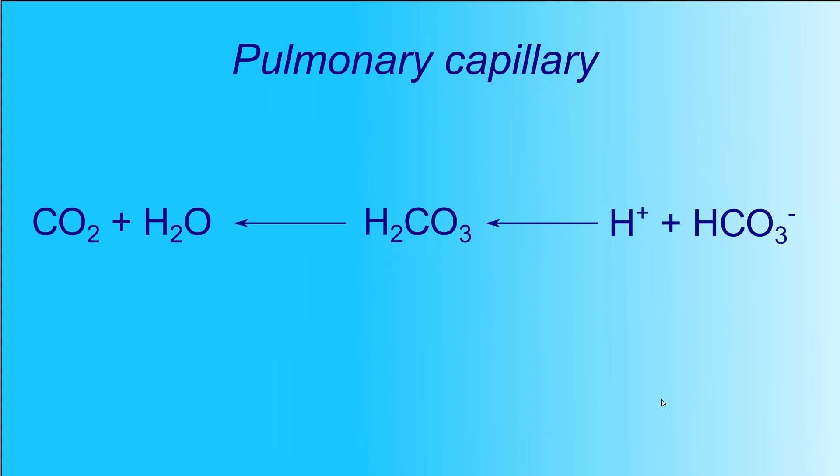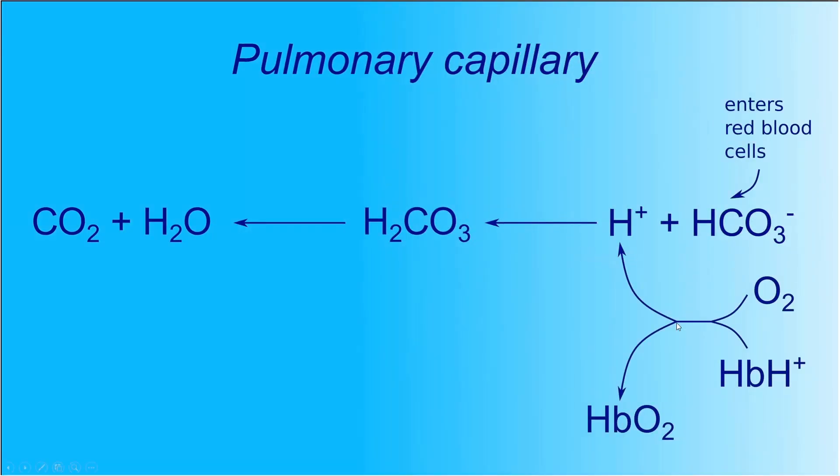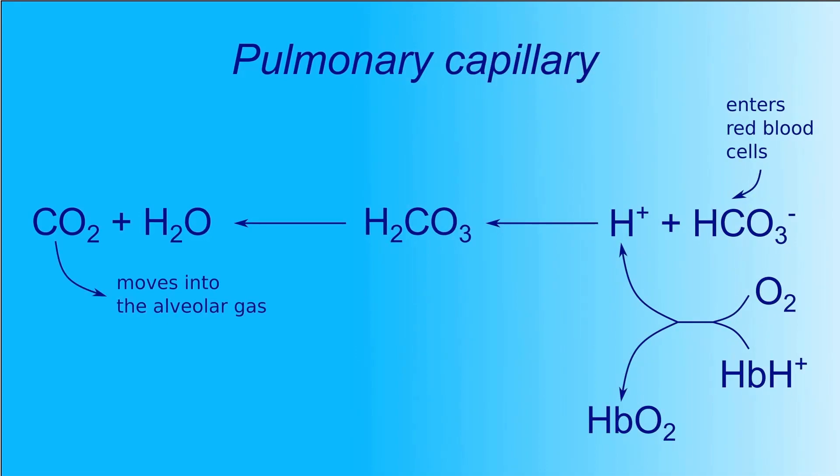In the pulmonary capillaries, the equilibrium shifts to the left and the concentration of H+ and HCO3- increases. The hydrogen ion detaches from hemoglobin, and the bicarbonate ion enters the red blood cell from plasma. In contrast, the amount of CO2 decreases as it moves into the alveolar gas.